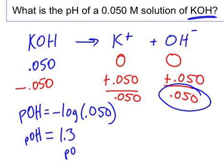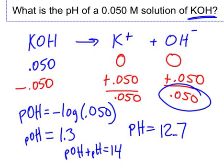And if you remember, POH plus pH is always equal to 14, at least under normal conditions. So if the POH is 1.3, then subtracting that from 14, the pH must be 12.7.